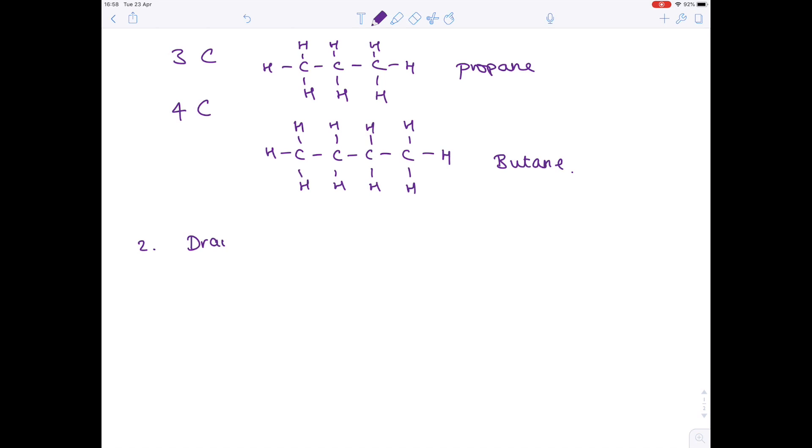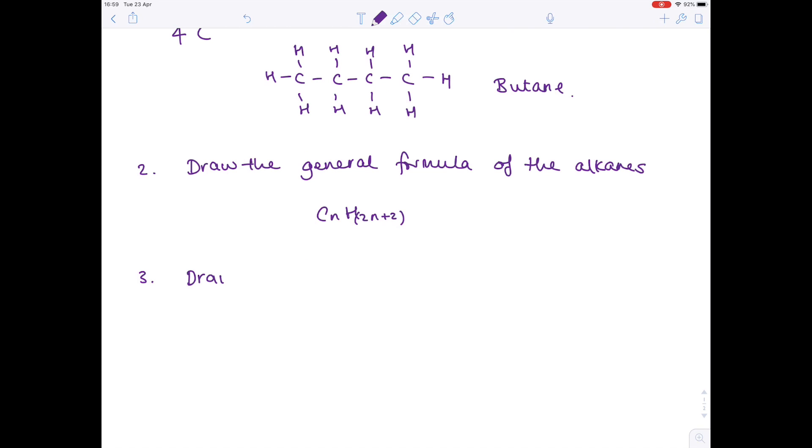Question two: draw the general formula of the alkanes. So your answer should look like this: CnH2n+2. Next up, draw the general formula of the alkenes. Your answer here is CnH2n.